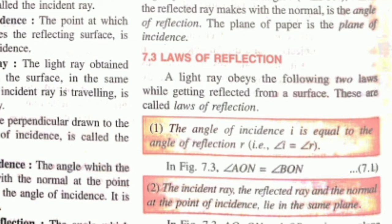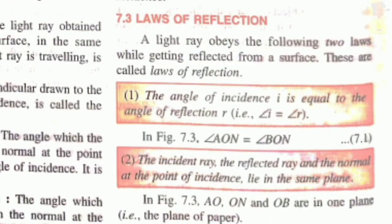These terms were quite easy. Next is the law of reflection. First law: the angle of incidence is equal to the angle of reflection. Second law: the incident ray, reflected ray, and normal all lie in the same plane — there is no other plane. They are always in the same plane only. So this is the second law of reflection.